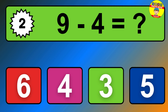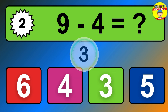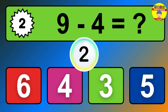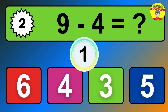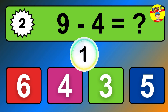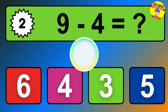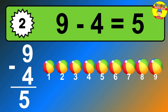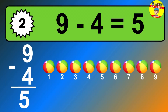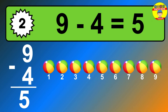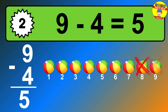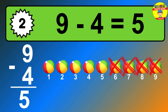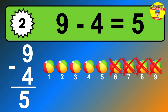Question 2. 9 minus 4 equals what? So the answer is 9 minus 4 is 5. Let's count it. 1, 2, 3, 4, 5.